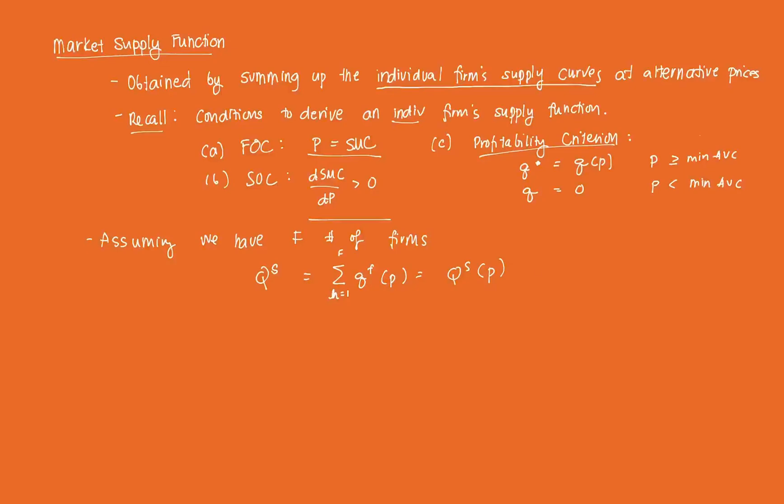And the firm will supply that for all prices greater than or equal to minimum AVC of the firm. An individual firm will choose to supply again based on the profitability criterion when price is greater than or equal to minimum AVC. And if it's less than minimum AVC, then the firm would opt not to produce anything.